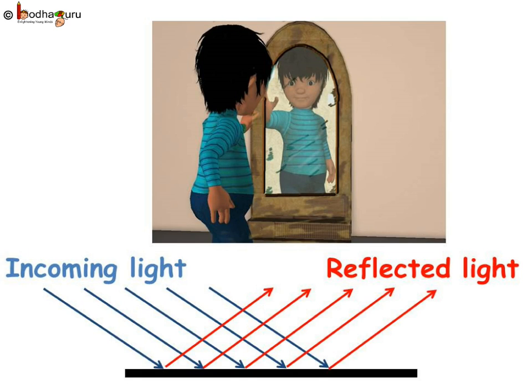When parallel rays get reflected by a smooth surface, say like a mirror, they remain parallel even after reflection.